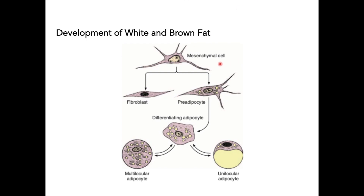White and brown fat both develop from mesenchymal cells. Mesenchymal cells differentiate initially into pre-adipocytes, or they can differentiate into fibroblasts. All parts of connective tissue can be derived from mesenchymal cells. Mesenchymal cells still acquire stellate features or stellate processes.